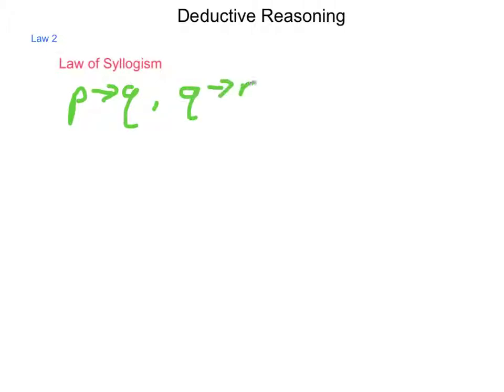...then Q is true, and if Q, then R is true, it must hold true that if P, then R. So we can skip over the middle step, basically, and come to a conclusion quicker by going around the intermediary part.